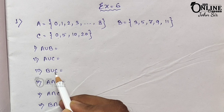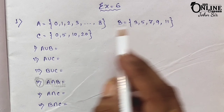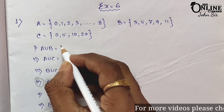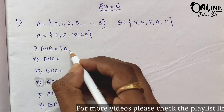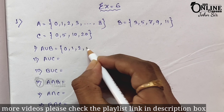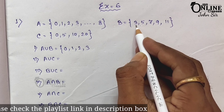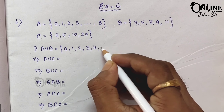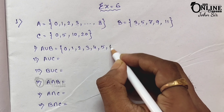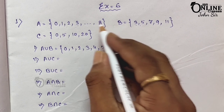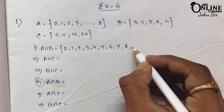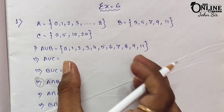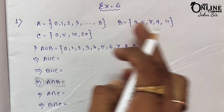When B union C, you have to write down all elements of B and C. So for the first one, A union B, it would be 0, 1, 2, 3 — as here 3 appears in both, so write it only once — then 4, 5, 6, 7, 8, 9, and 11. So that is A union B: all the elements of set A and set B.